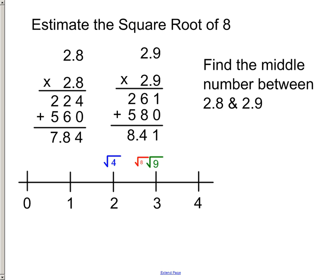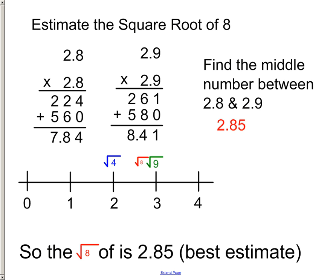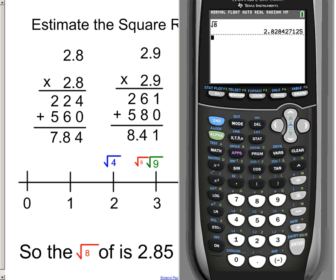What's in the middle between 2.8 and 2.9? 2.85. So, I'm saying the square root of 8 is 2.85. That's my best estimate. And so, let's just go through and check in on the calculator now. 2.82. We're just a little bit off on our estimation, but it's really close. So, time to go practice.